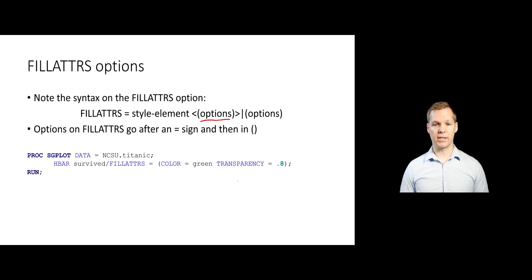For example, if we wanted to change the color and transparency of our bars in our bar plot we're going to make, we can see that we can do fill attributes and then equal, and then we put within parentheses the color and transparency that we want to change. Again, trying to figure out how to read this SAS help documentation is really important because if you now have another option that you want to go figure out how to use, you need to be able to parse that kind of language. So it's pretty important.